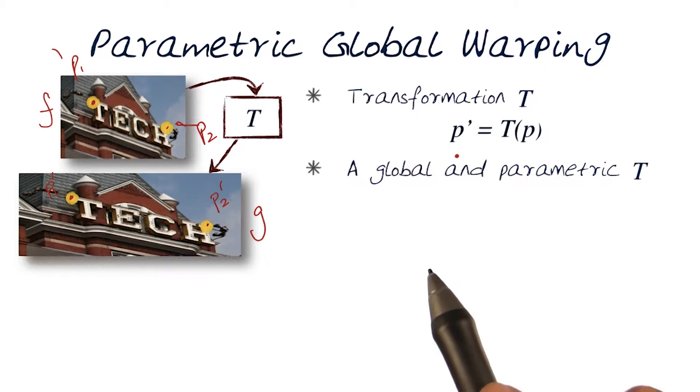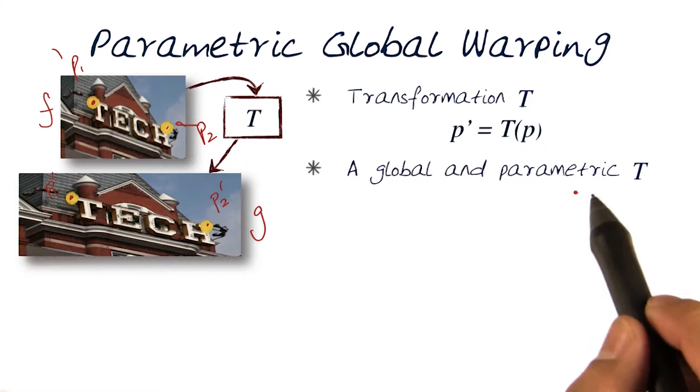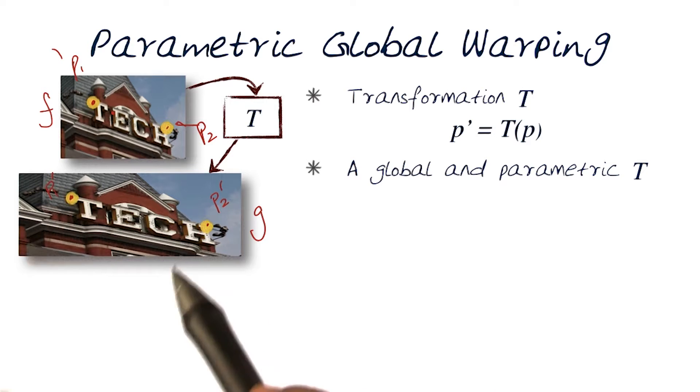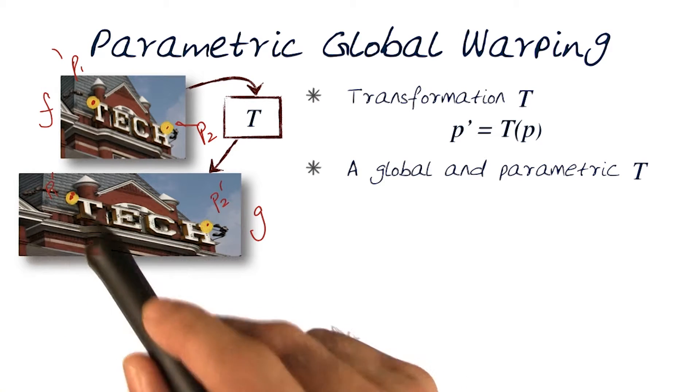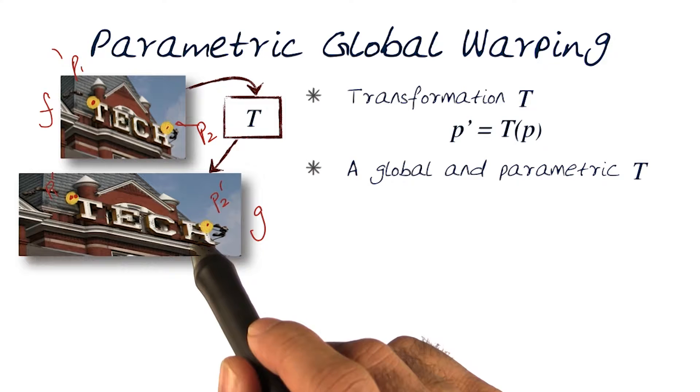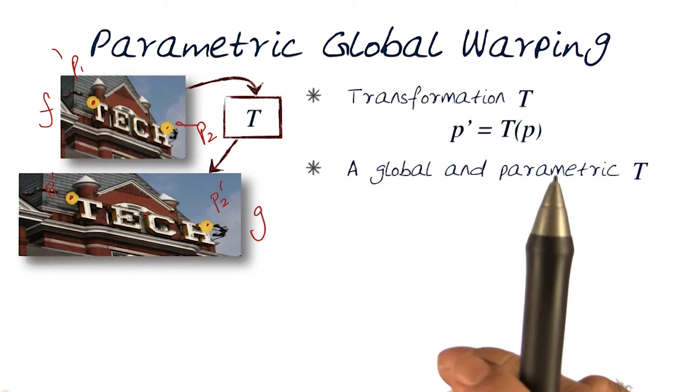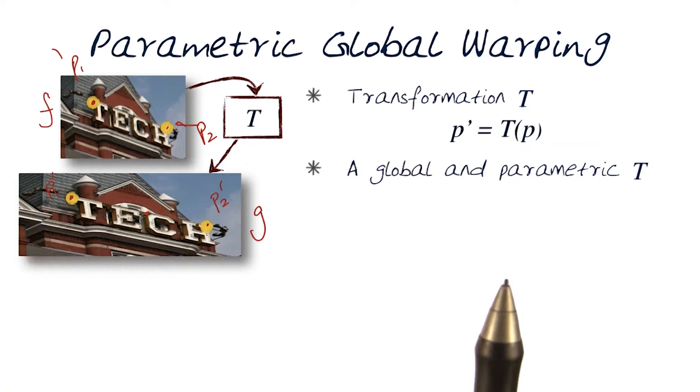We want to find one function T which has a set of parameters that actually applies this thing entirely to the whole image. I'm talking about one function that directly applies to each and every pixel. This means that this would be a global warp. The same function, the same parametric function would be applied to the entire image.